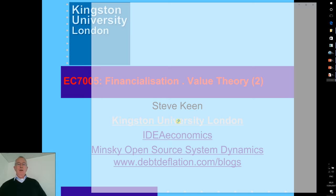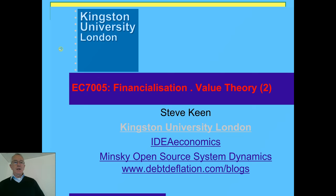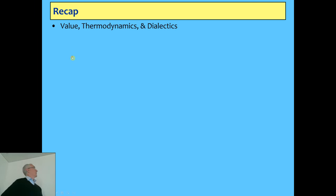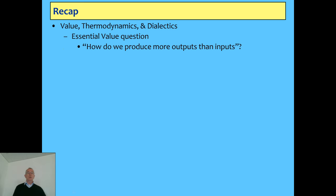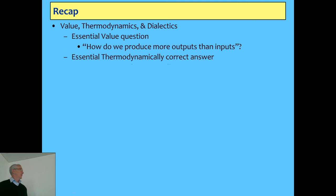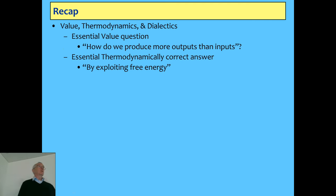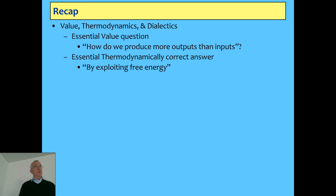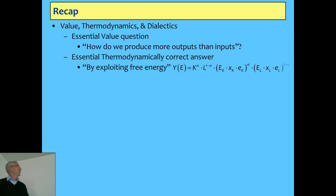So last week I talked about value and thermodynamics in general and finished up with talking a bit about dialectics, but much more to cover on that today. The essential question is how do we produce more outputs than inputs, which only the physiocrats really seriously answered — and got right given what they knew — which is exploiting free energy. They thought it was only agriculture, but in fact it's any form of energy we find, not just solar energy but coal, nuclear, et cetera. That's the equation I derived, which gives energy an essential role in production.